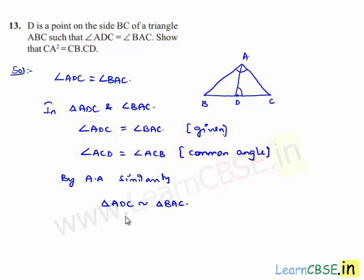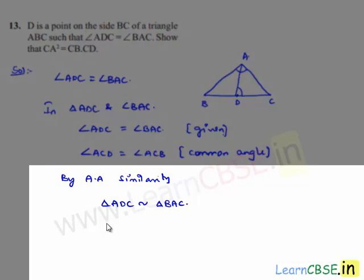We know that when two triangles are similar, then corresponding sides will be in proportion. So here we can write AD by AB is equal to CD by CA which is equal to CA by CB.